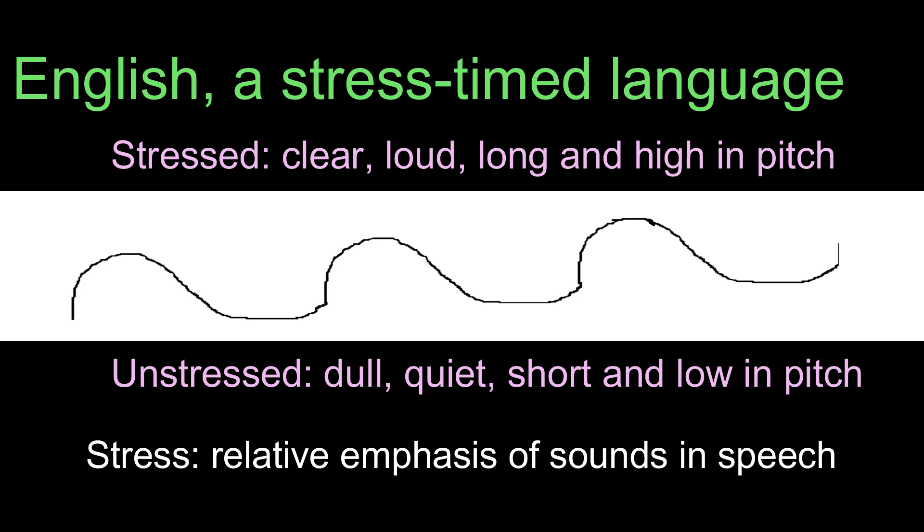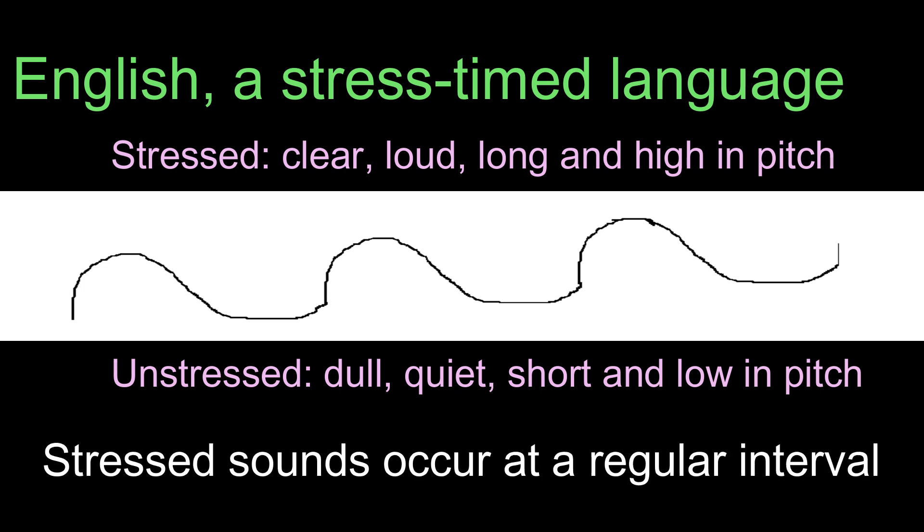In English speech, stressed sounds tend to occur at a regular interval of time, thus creating the undulation of the sound wave. Since the regular occurrence of stressed syllables is the cause of rhythm, English is called a stress-timed language.